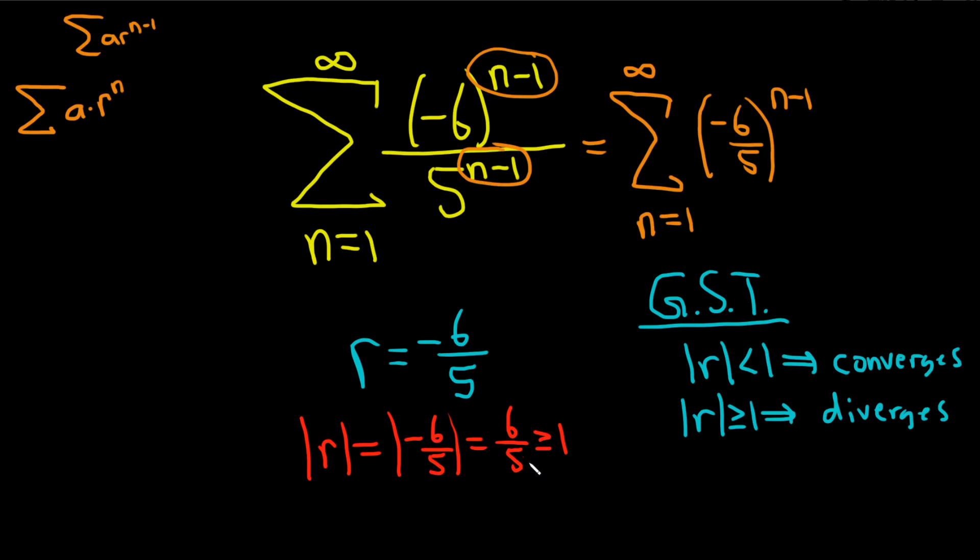Remember greater than or equal to means greater than or equal to, so if something is bigger than 1 it's certainly greater than or equal to 1, so you're allowed to use that notation. So it diverges by the geometric series test.